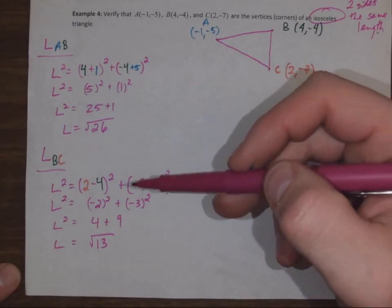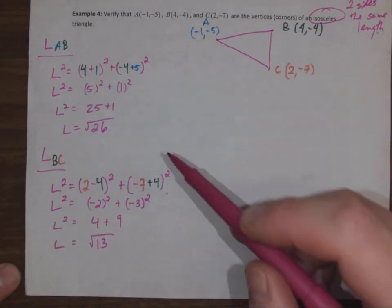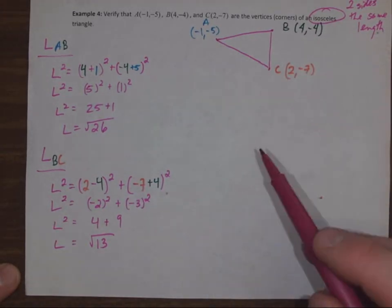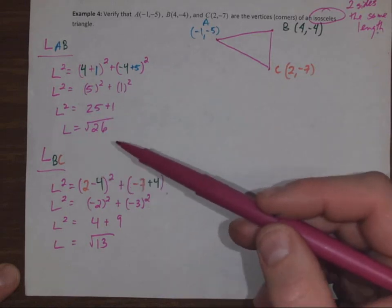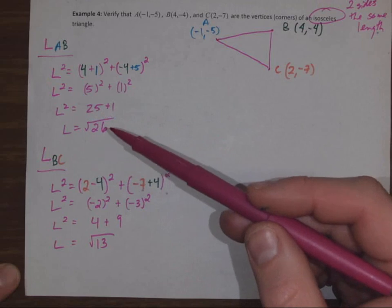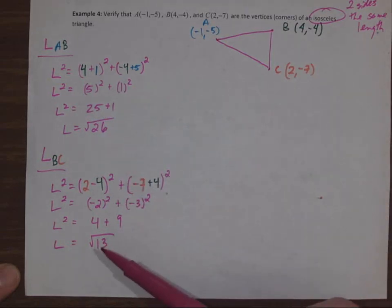Right now when we compare, those two lengths are different. For an isosceles triangle we need two to be the same. So AC, we're looking does it actually equal the square root of 26 for a length or the square root of 13?